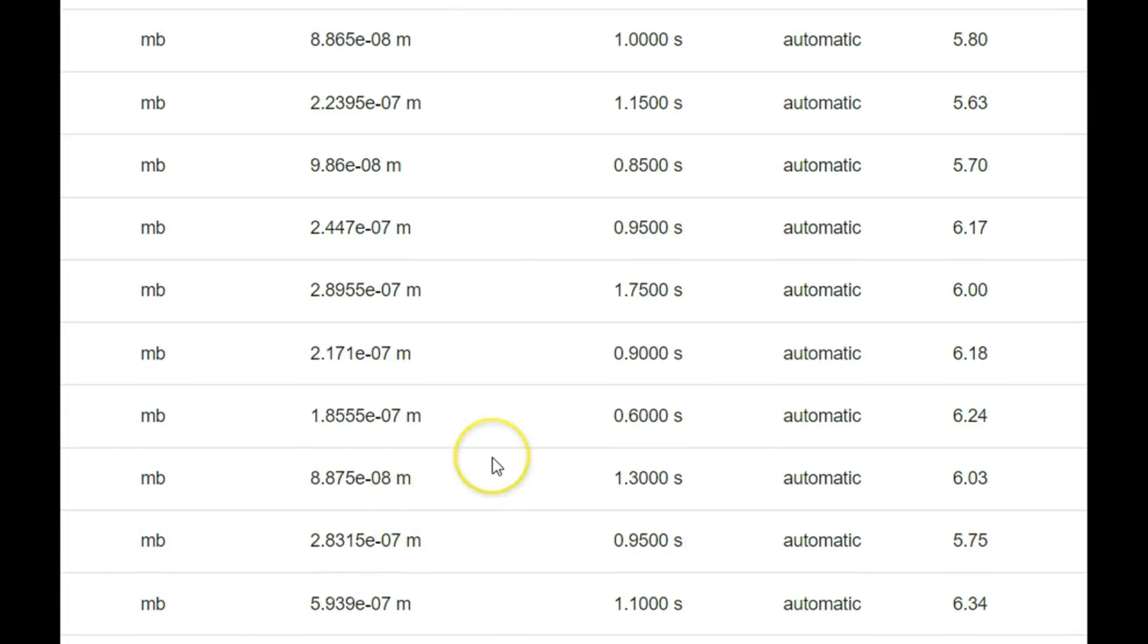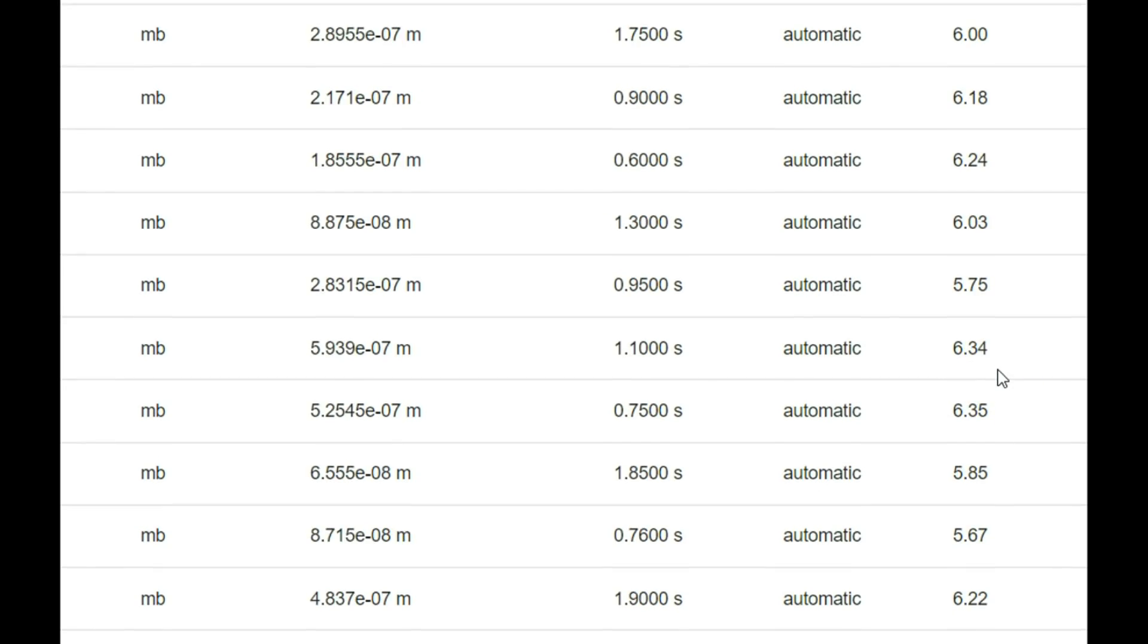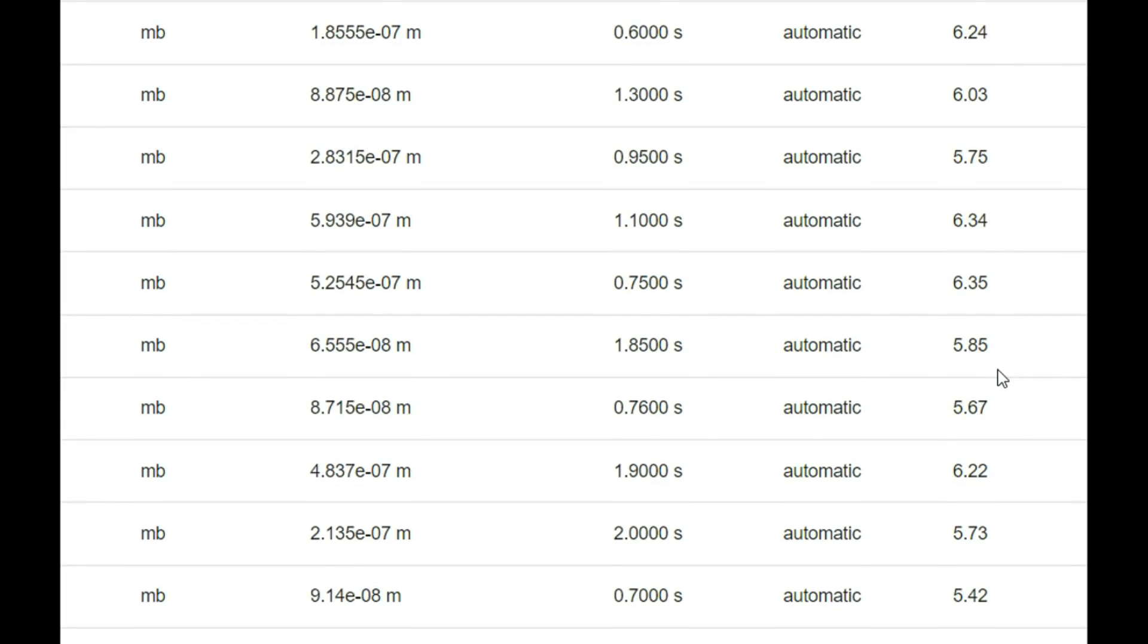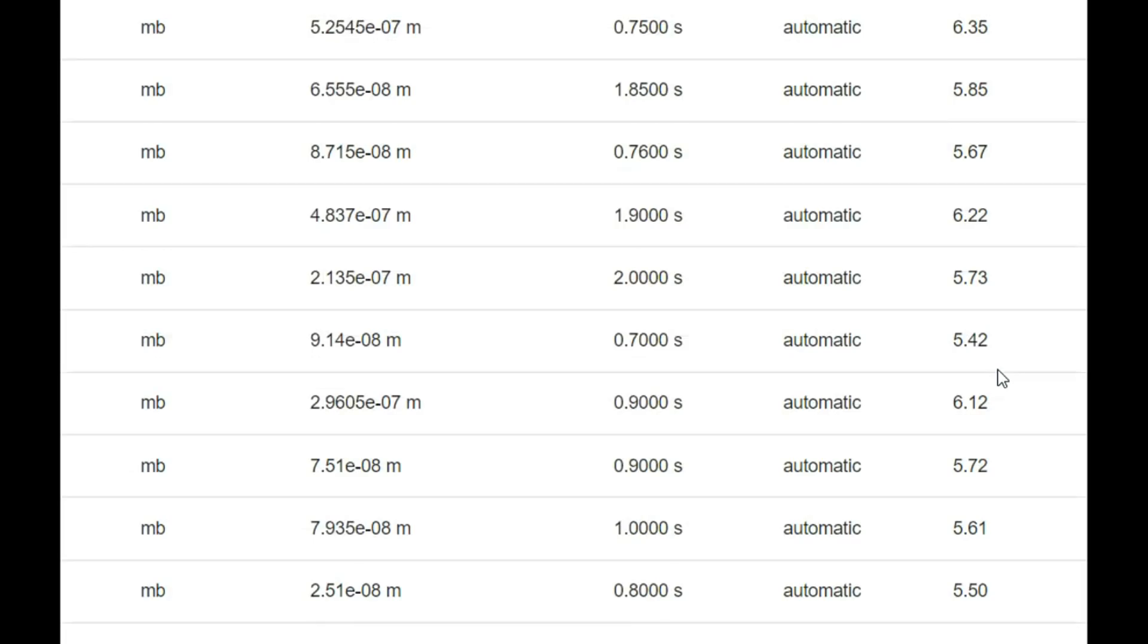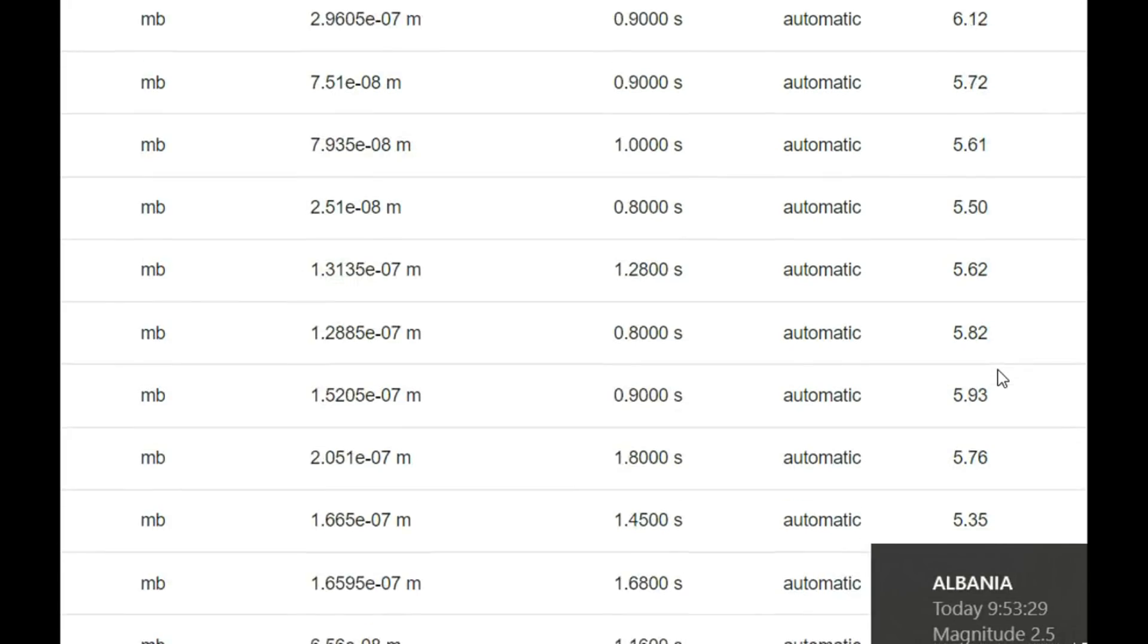It was probably stronger. Here we got automatic by the computer: 6.24, 6.18, 6.0, 6.35, 6.22, 6.12.